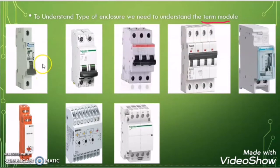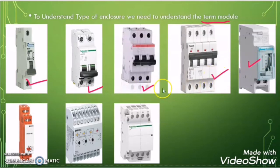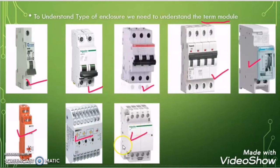Here I have shown many types of breakers. This is a single pole breaker, this is a double pole breaker, this is a three pole breaker, and this is a four pole breaker. This is a timer, this is a UV relay, this is another type of UV relay, and this is the contactor.